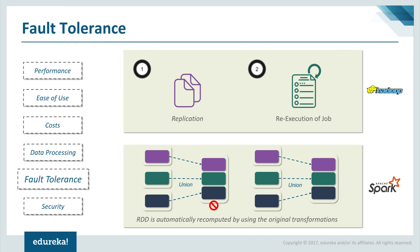Now, fault tolerance. Hadoop and Spark both provide fault tolerance but with different approaches. For HDFS and Yarn, the master daemons — the NameNode in HDFS and the ResourceManager in Yarn — check the heartbeat of slave daemons (DataNodes and NodeManagers). If any slave daemon fails, the master reschedules all pending and in-progress operations to another slave. This method is effective but can significantly increase completion time even with a single failure. Hadoop also ensures fault tolerance by replicating data, since it uses commodity hardware.